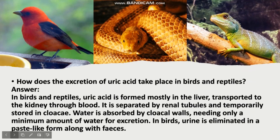How does the excretion of uric acid take place in birds and reptiles? In birds and reptiles, uric acid is formed mostly in the liver, transported to the kidney through blood. It is separated by renal tubules and temporarily stored in the cloaca. Water is absorbed by cloacal walls, needing only a minimum amount of water for excretion. In birds, urine is eliminated in a feces-like form along with feces.